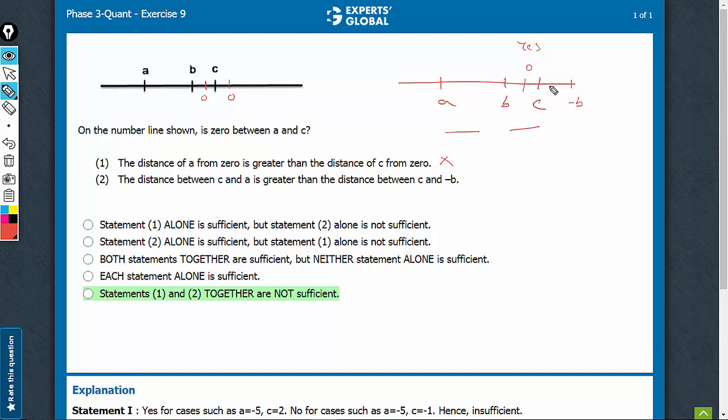The other case can be that 0 is here and therefore, minus B is somewhere here and you see CA is greater than C minus B and 0 is on the right of C. It's not between A and C.